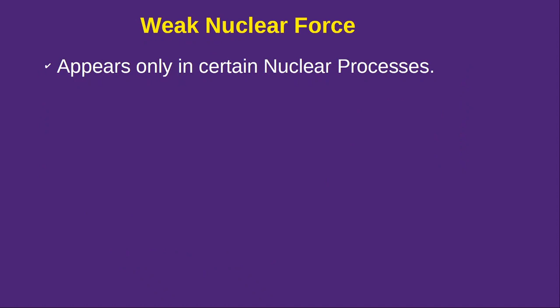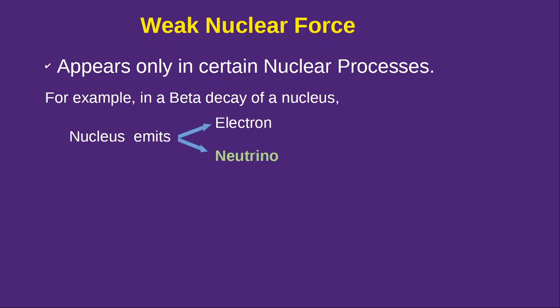Next is the weak nuclear force. It only appears in certain nuclear processes. For example in a beta decay, nucleus emits electron and neutrino. It is the interaction of this neutrino with other subatomic particles that is known as the weak nuclear force. More details about this weak nuclear force you will find in higher classes.